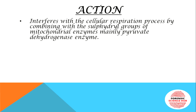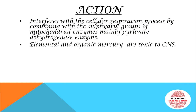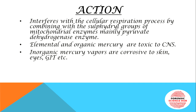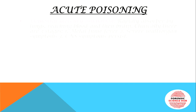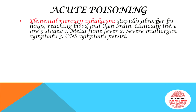Regarding the mechanism of action, mercury interferes with the cellular respiration process by combining with sulfhydryl groups of mitochondrial enzymes. Similar to arsenic, it attacks the pyruvate dehydrogenase enzyme and thereby affects the respiration process. Elemental mercury and organic mercury are primarily toxic to the CNS — the central nervous system. Inorganic mercury vapors, when inhaled, are corrosive to the skin, eyes, and GI tract, and metallic mercury vapors also act as pulmonary irritants.